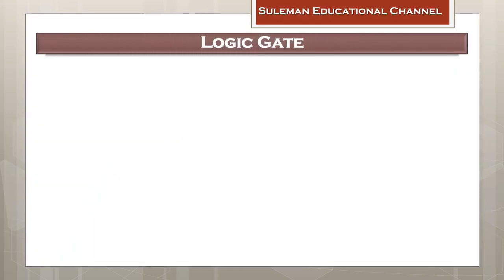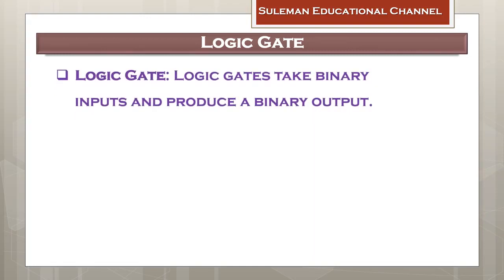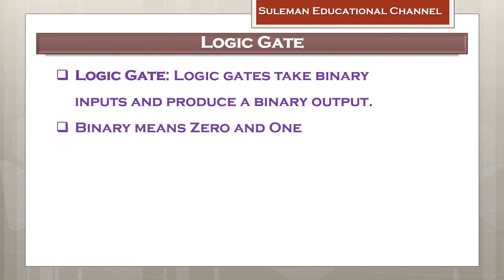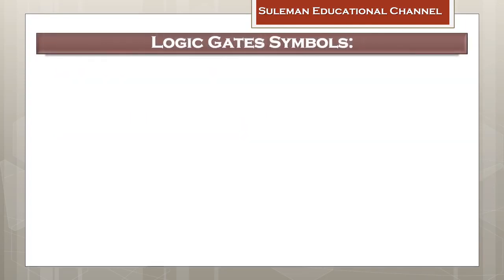First we will discuss about logic gates. A logic gate is a device that works on binary input and gives binary output. Remember, binary means zero and one. So a logic gate takes zero and one as input to produce either zero or one as output, depending on the type of logic gate.